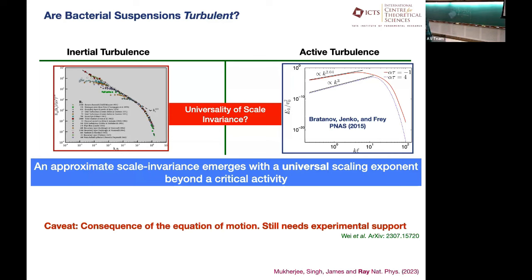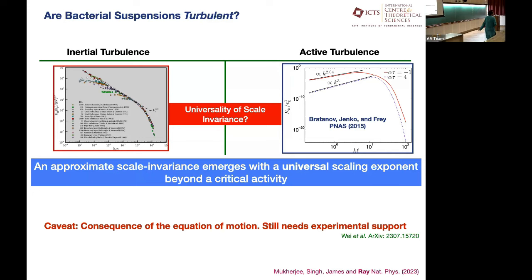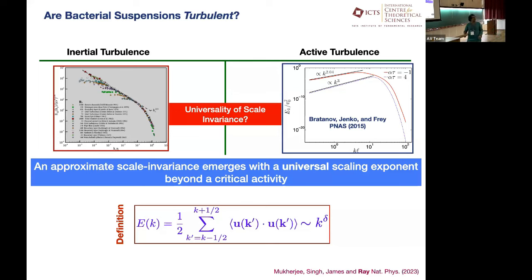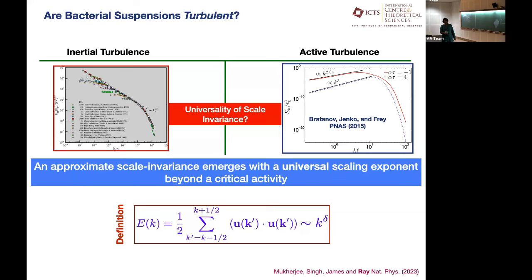So the definition: the energy spectrum scales as K to the power delta. In inertial turbulence, delta is always minus five-thirds. In bacterial turbulence, Fry and his group had shown that delta varies as a function of alpha — that's the central point. Using a field-theoretic closure technique, we take the governing nonlinear equations, multiply them with u's at two coordinates — essentially a closure model. This gives an effective equation for the energy spectrum E(K) connected with pi, the flux of energy going across Fourier modes.